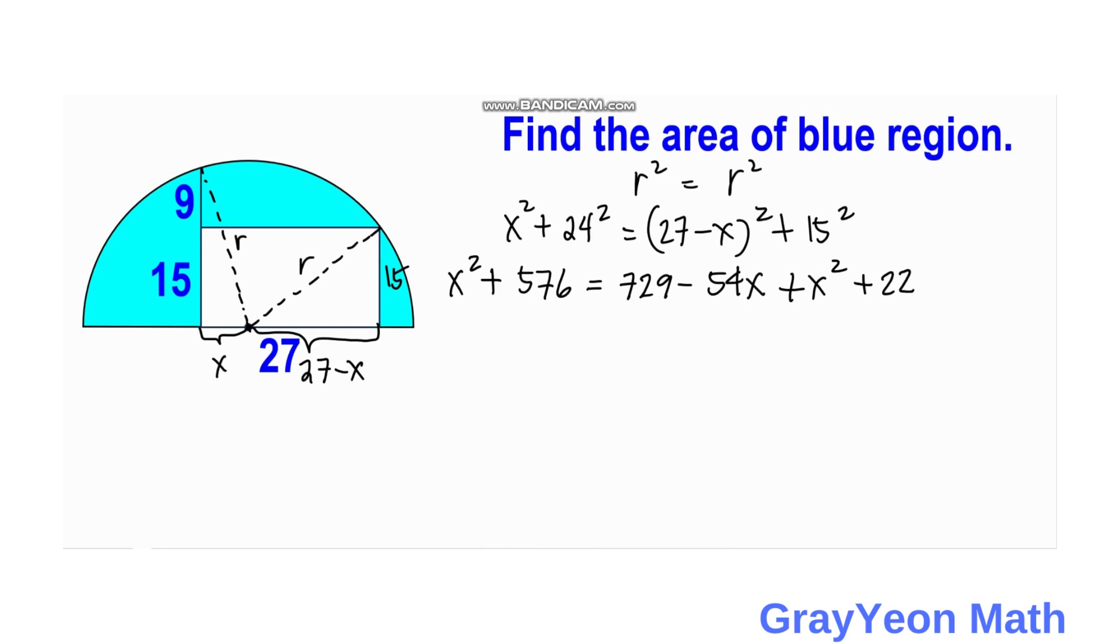15 square is equal to 225. And we cancel both x square on the left hand and the right hand side.